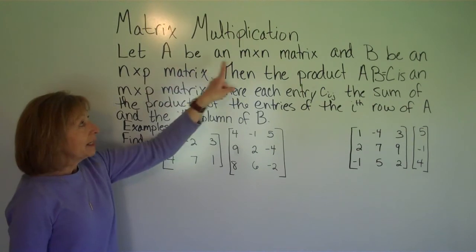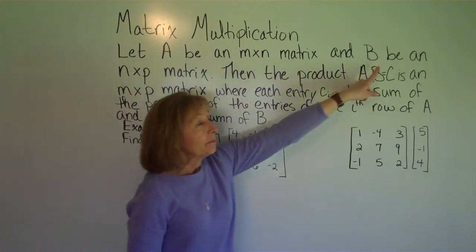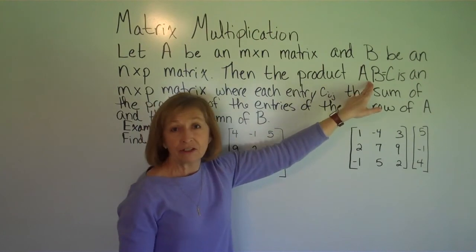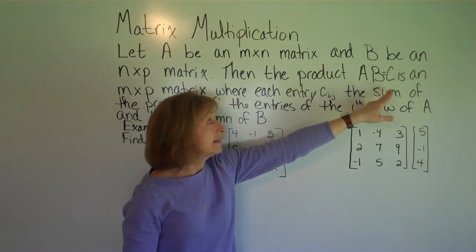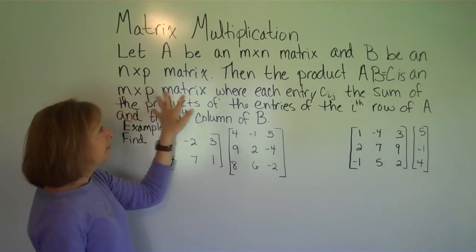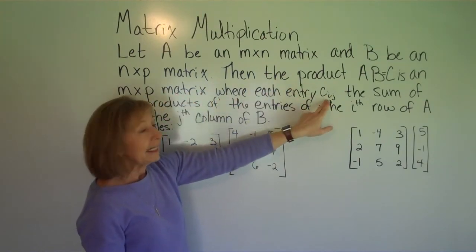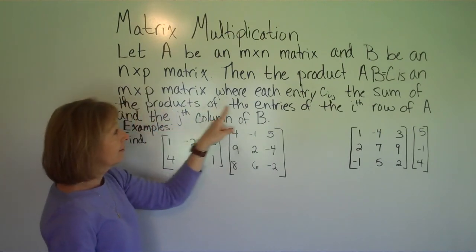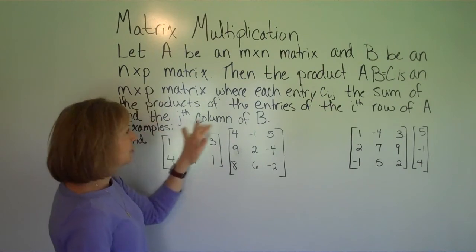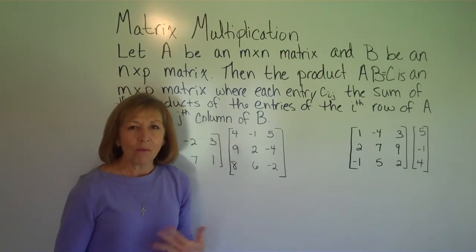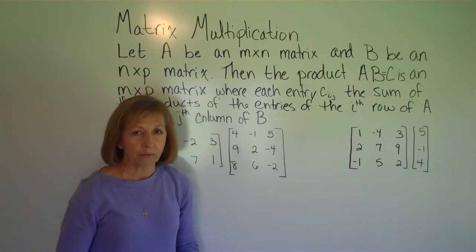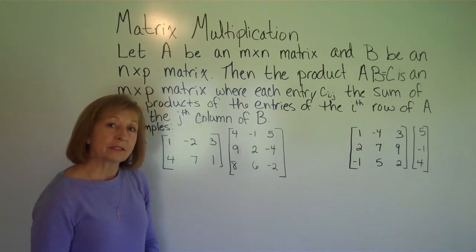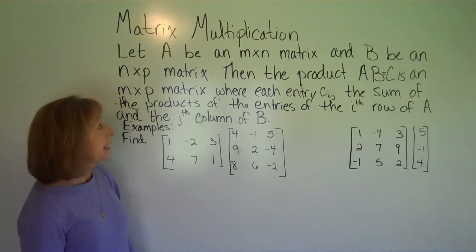Let A be an M by N matrix and B be an N by P matrix. Then the product A times B is another matrix C, and it's an M by P matrix where each entry, c sub ij, is the sum of the products of the entries of the i-th row of A and the j-th column of B. When we say out loud what we're doing with matrix multiplication, it gets really confusing, and that's why I want to go right to examples to let you see what's being discussed in that multiplication definition.